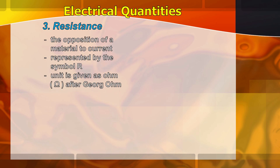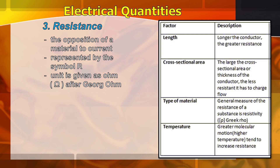The third electrical quantity is resistance — the opposition of materials to current, represented by the symbol R. The unit for resistance is Ohm, named after George Simon Ohm. Factors affecting resistance include: length (the longer the conductor, the greater the resistance); cross-sectional area (the larger the area, the less resistance); type of material, measured by resistivity (rho); and temperature — greater molecular motion at higher temperatures produces higher resistance, meaning hotter conditions yield greater resistance.